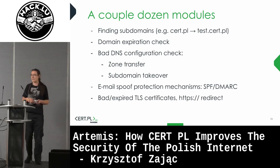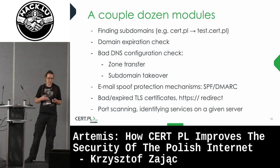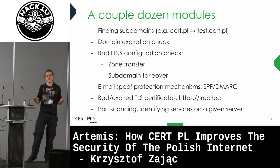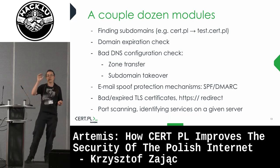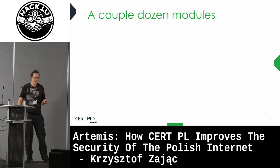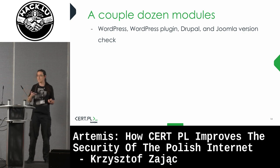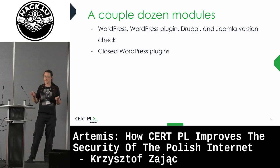We check whether TLS certificates are correct, whether redirects are in place — just all the low-hanging fruit. We scan the ports and identify the services, whether it's HTTP, a database, or FTP. After identifying the services, we are able to check the versions of content management systems and plugins — for example, whether WordPress plugins are closed because they are no longer developed, having been banned from the plugin repository for security vulnerabilities. That happens.